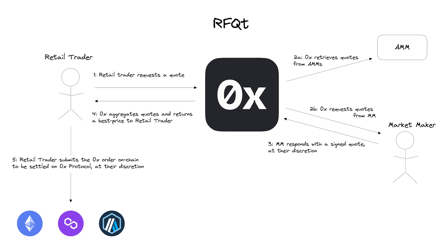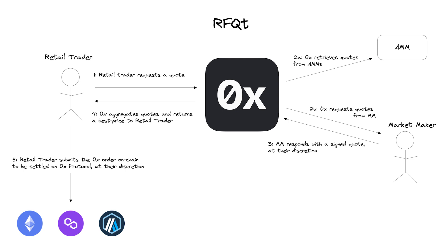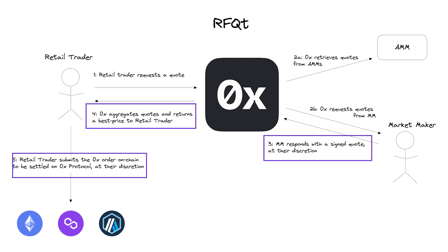In this diagram, we're labeling what that process looks like. Your end user is that retail trader. The first step is they're requesting a quote — for example, trying to trade WETH for USDC, selling 0.5 WETH. What we're doing when we get that request at Xerox is we're pinging AMMs to get quotes, and at the same time, we're also requesting quotes from market makers. We're getting all the potential sources and routes that a trade can go through, aggregating all of it. Then our router figures out what is the best way to make that trade. Once we get all of that information, we'll send that best route back to you or your end user, which they will submit on chain, and you get back the call data to execute that trade.